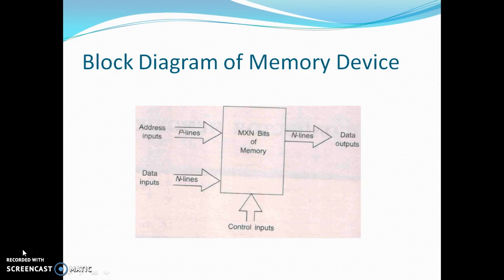In the block diagram of the memory device, M locations of the memory are each defined by a unique memory address. Therefore, P address inputs are required where 2 raised to P equals M. This set of lines is referred to as the address input or address bus. The address is specified in memory form. So we have P address lines, then the data input lines are the N lines which are the input lines, and the output lines carry data along with a control input.